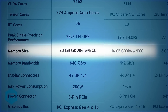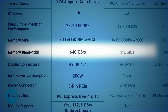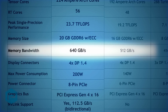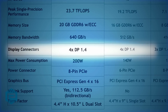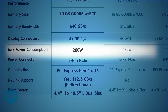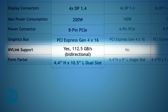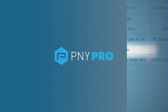The A4500 features 20GB of GPU memory, 4GB more than the A4000. The A4500 provides 128GB more memory bandwidth than the A4000. The A4500 is a dual-slot GPU, requiring slightly more power than the A4000. The A4500 supports NVLink — the first time NVLink support has been available in a 4000 series GPU.